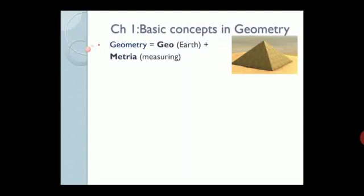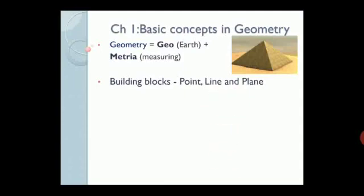Let's see which are the basic building blocks of geometry. A point, which is indicated by a simple dot. A line, which is a set of such points. And a plane, which is a set of such lines and points. By using these three, we can form various geometrical shapes.